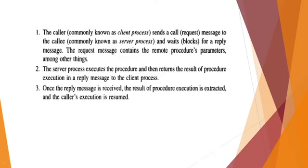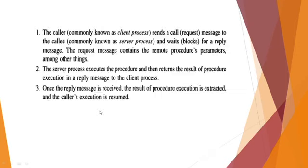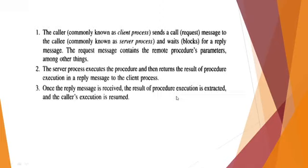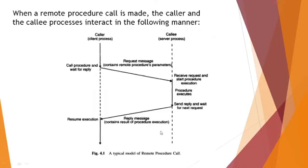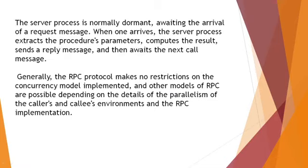The client process sends a call message to the callee and waits in a blocked state for a reply message. The request message contains the remote procedure's parameters. The server process executes the procedure and returns the result in the form of a reply message. Once the reply message is received, the caller's execution is resumed and it takes the result from the reply message.